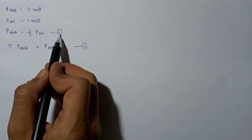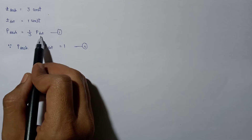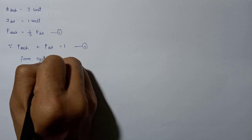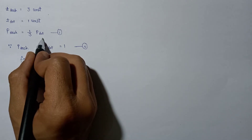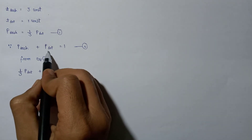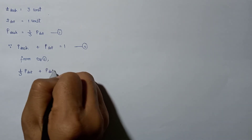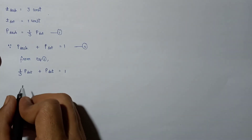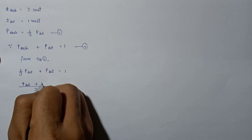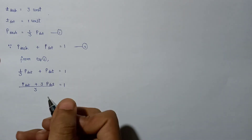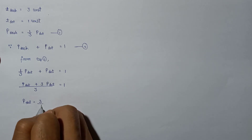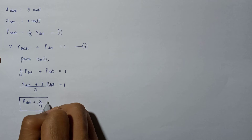From equation one, P(dash) = (1/3) P(dot). Substituting into equation two: (1/3) P(dot) + P(dot) = 1. Taking LCM of 3: P(dot) + 3·P(dot) = 3, giving 4·P(dot) = 3, so P(dot) = 3/4.